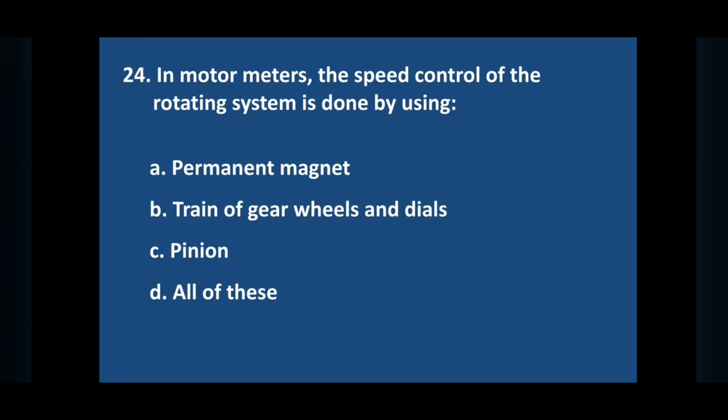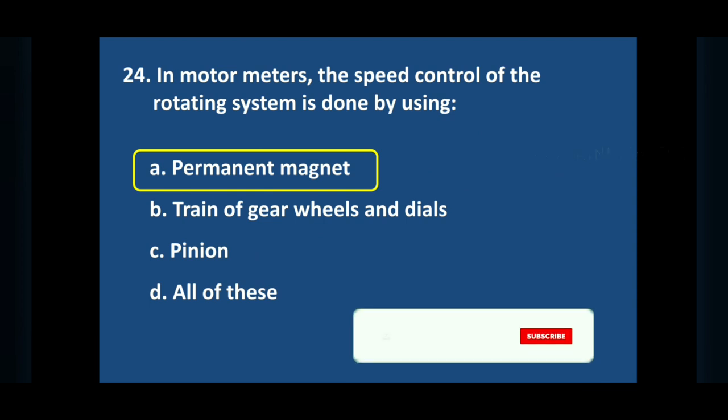Question number 24: in motor meters, the speed control of the rotating system is done by using. Answer is option A, permanent magnet.